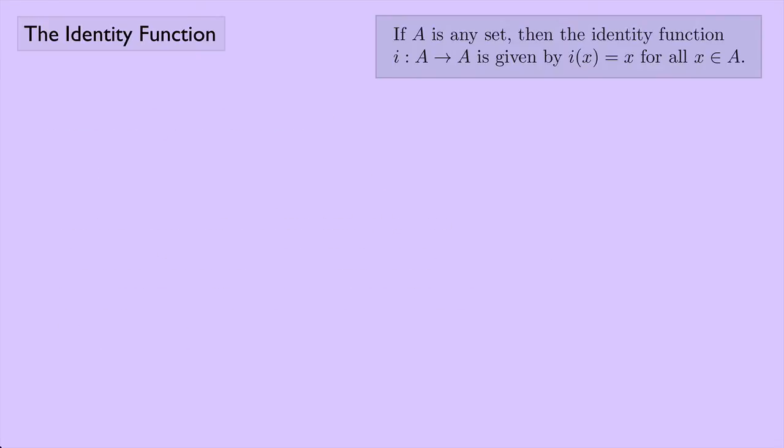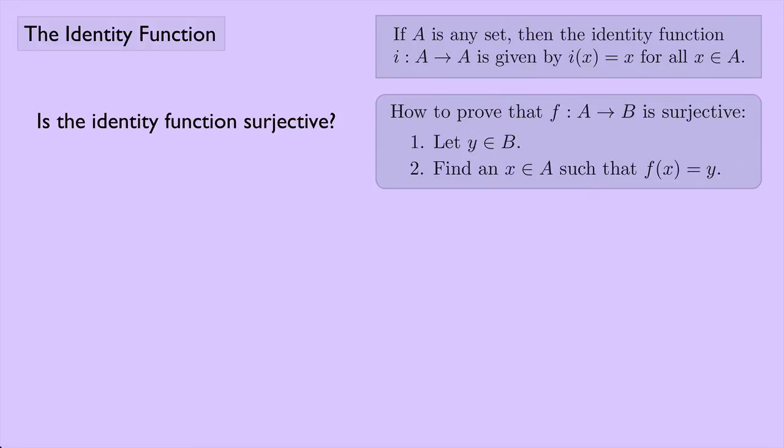Okay, so we showed that i was injective. How about surjective? Again, we might suspect that the identity function will be surjective. Here's how you prove that something is surjective. Let's go ahead and try and prove it. So first, I'm again going to define the identity function, just using the definition that's given up here.